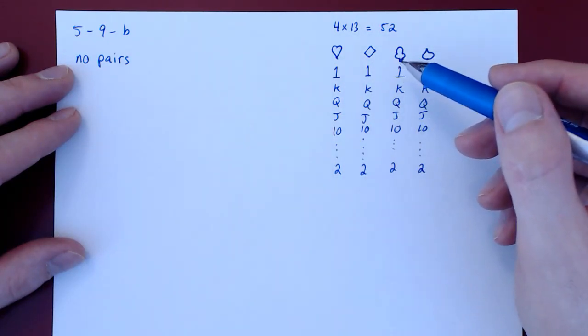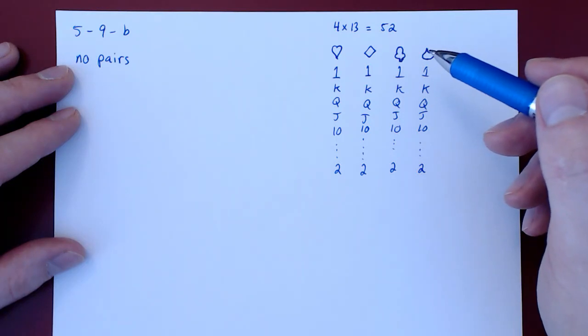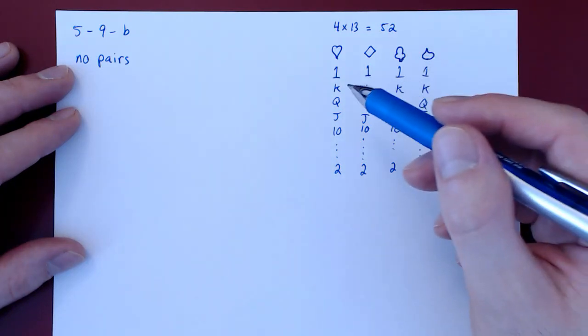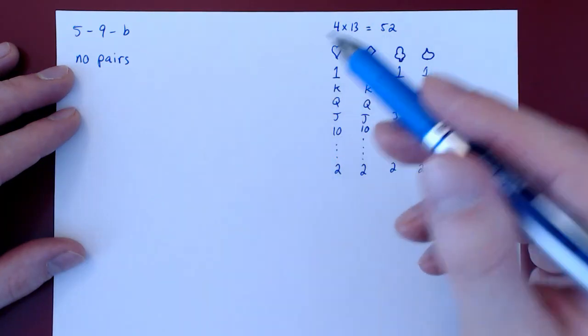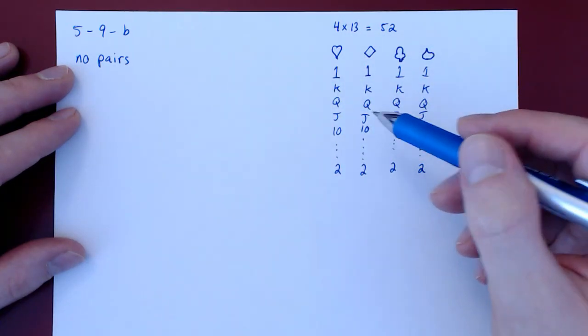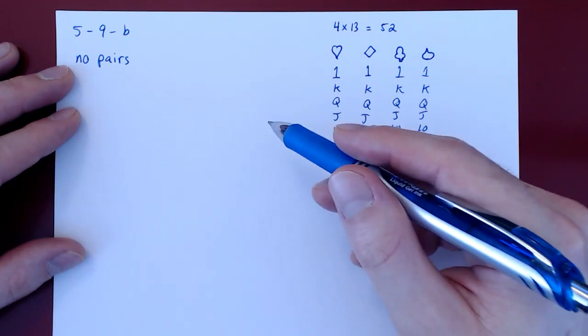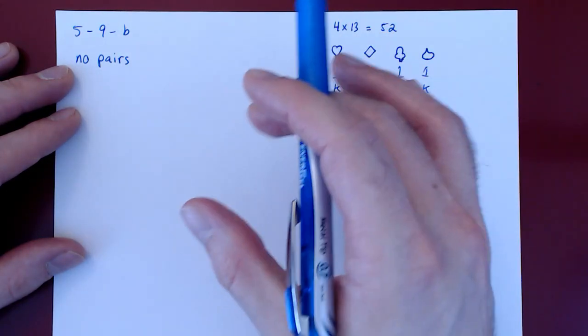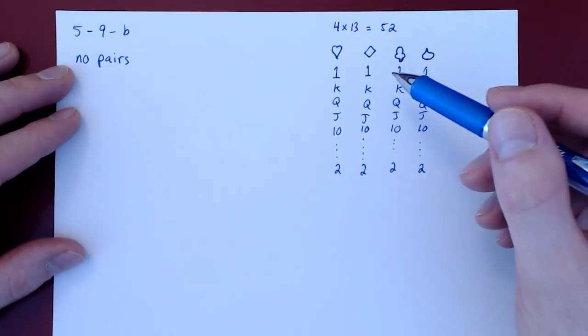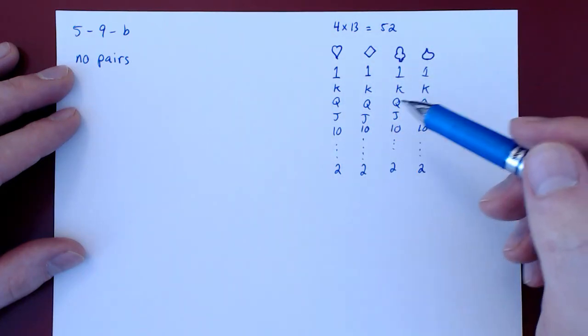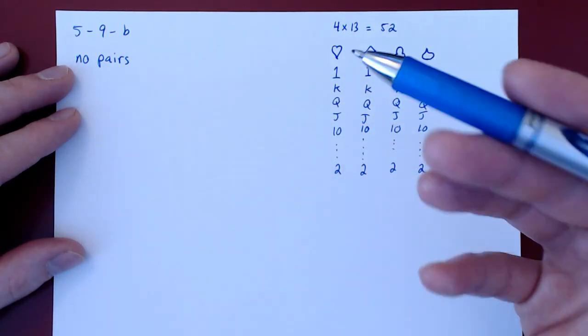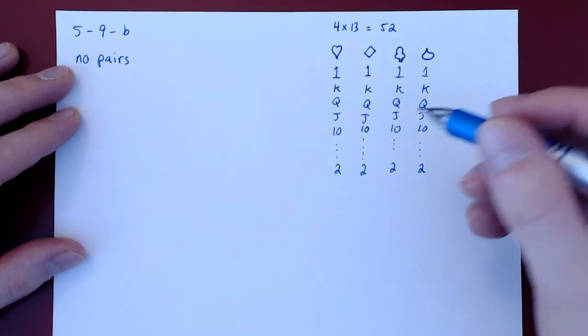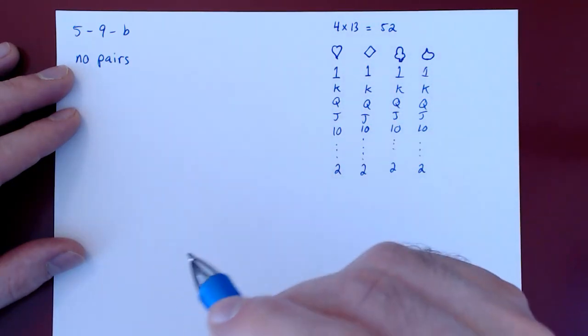And is the selection ordered or unordered? Well, if I give you a king of hearts, then a jack of clubs, or flip the order, that's the same hand. So clearly here we have a selection that is unordered without replacement. In counting the possible hands of cards, we can use combinations.